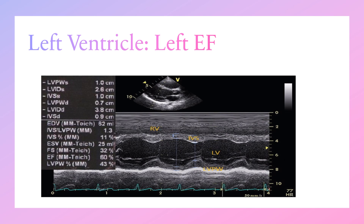The second method is the Simpson method, which traces the inner side of the chambers. The third is M-mode: we obtain it through the parasternal long axis, place the cursor in the mid-cavity, and take measurements of the left ventricle end-diastolic and end-systolic diameters. The machine applies the equation to give a rapid ejection fraction measurement.